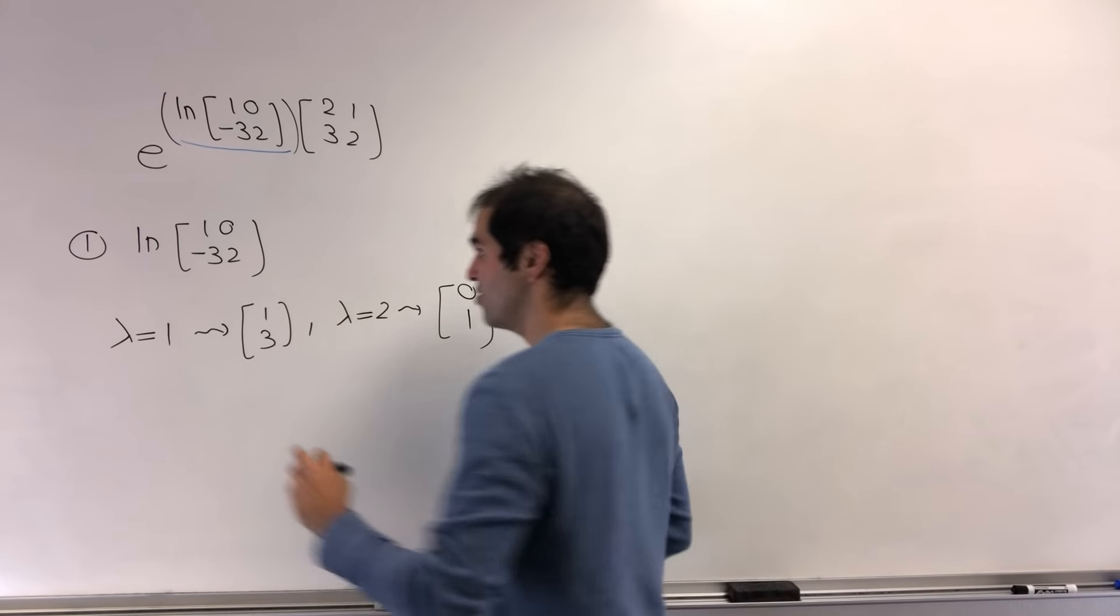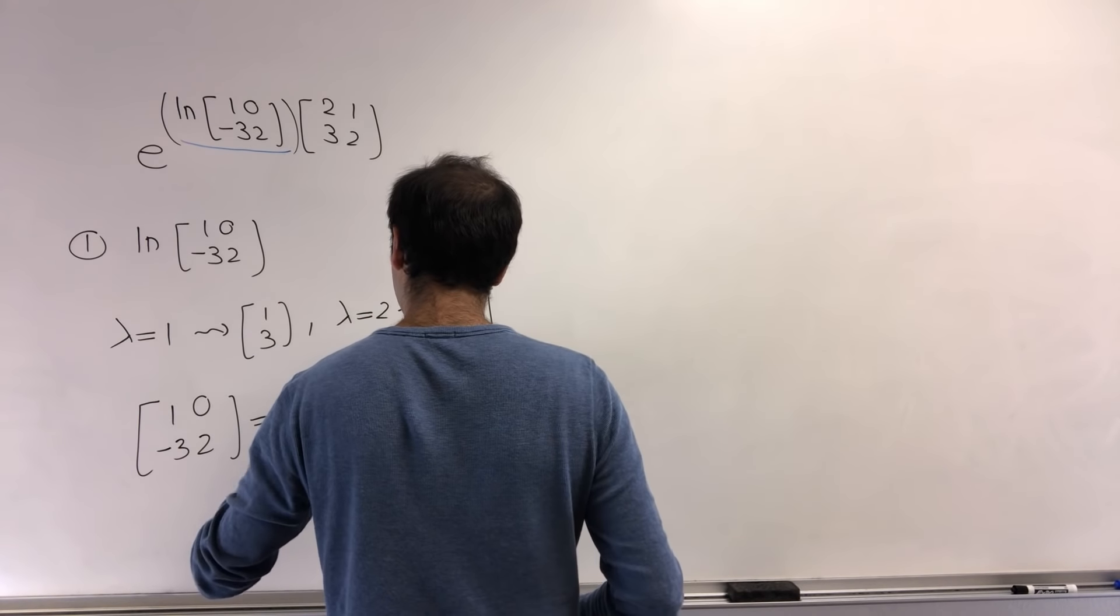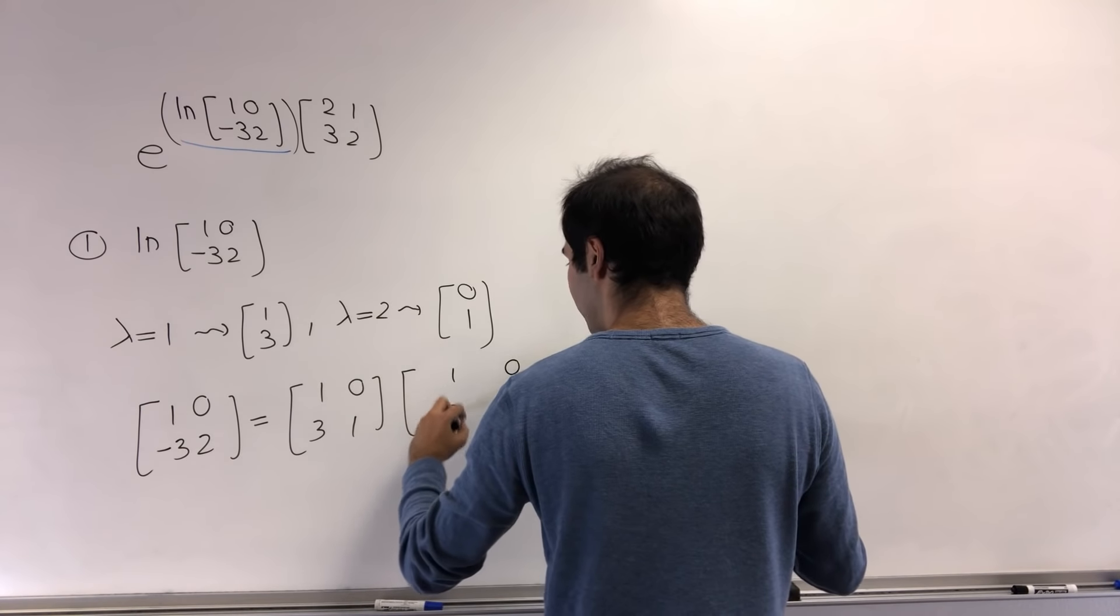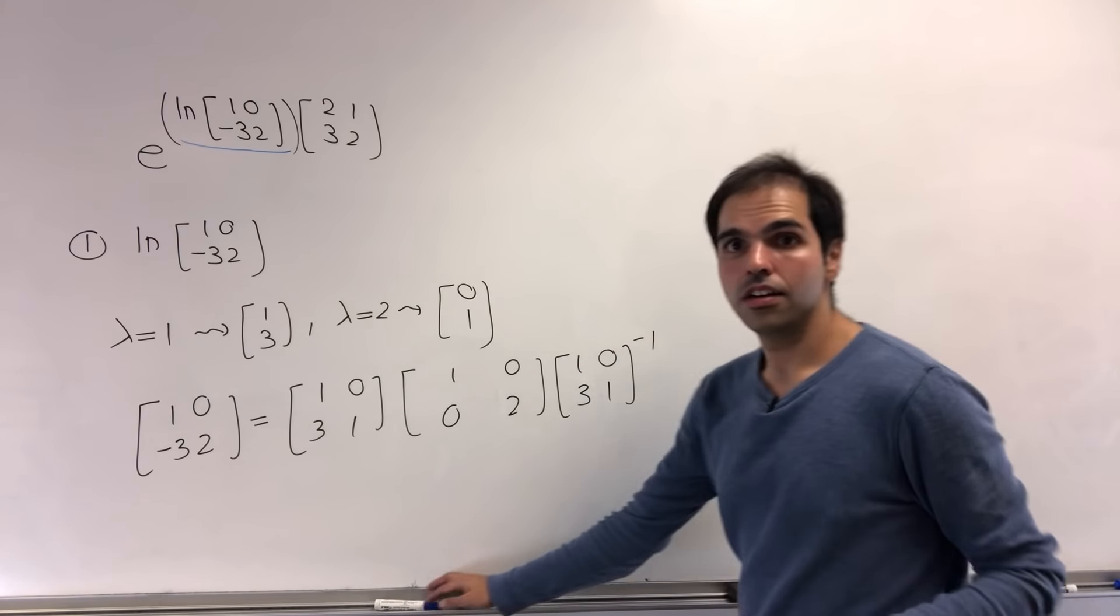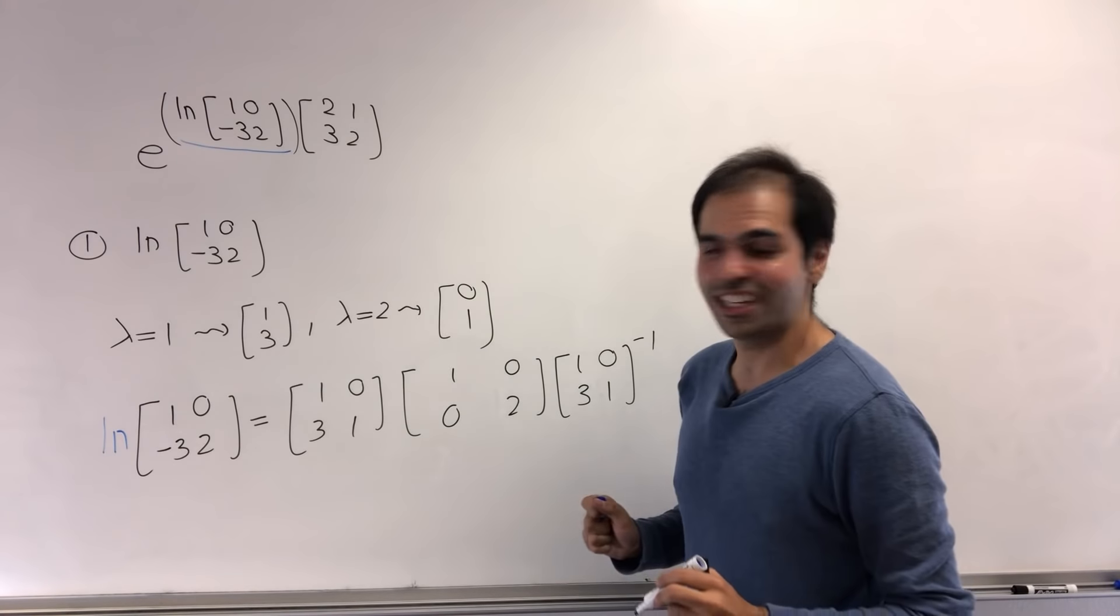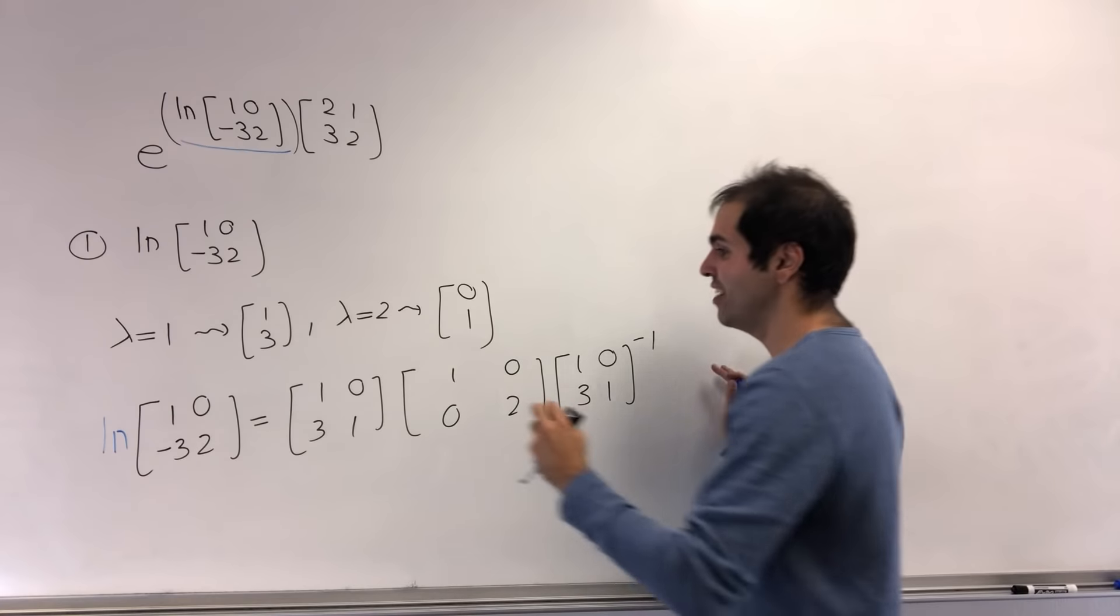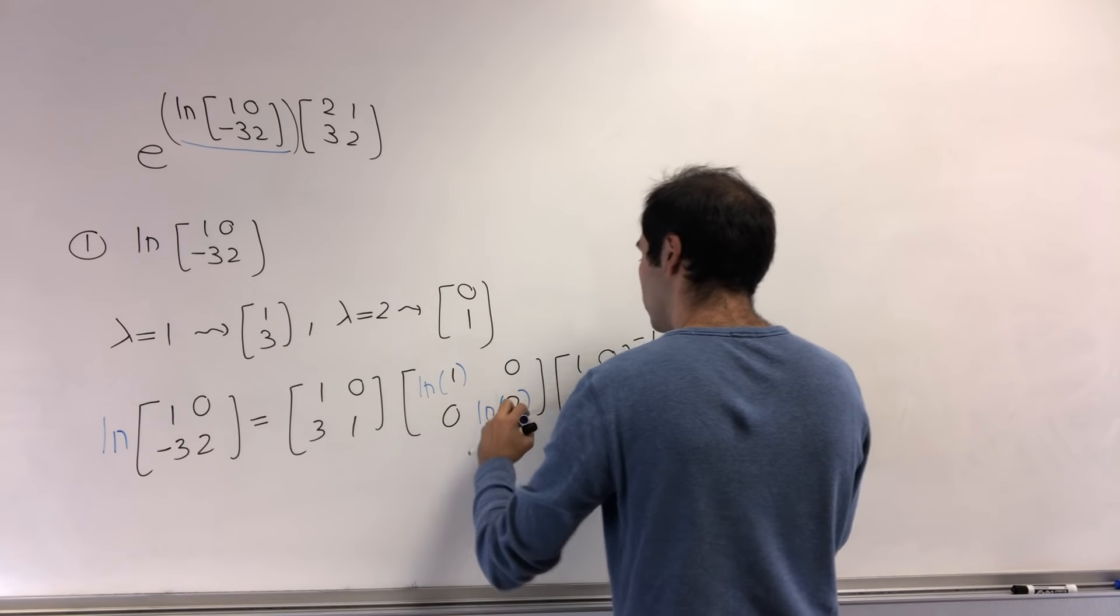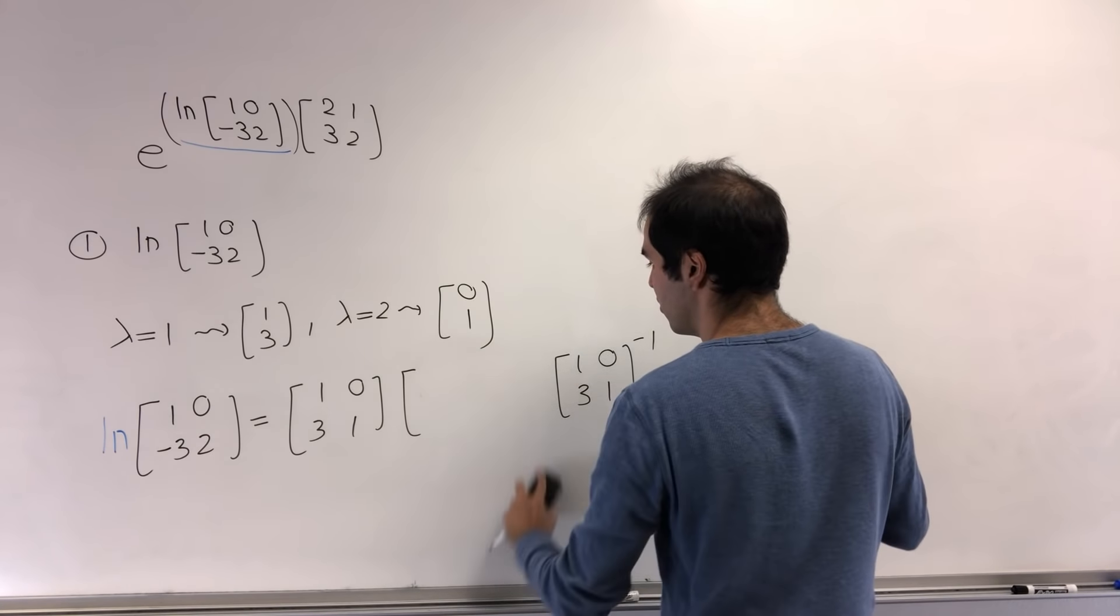But what does that tell us? Well, it tells you that the matrix 1, 0, minus 3, 2, that is just 1, 3, 0, 1. So the eigenvectors times the corresponding eigenvalues, 1, 0, 0, 2, and then times 1, 0, 3, 1 inverse. And how do you do ln of that? Well, to take weird functions of matrices, the nice thing here is, because you diagonalize it, you just need to put ln on the diagonal entries. So ln of 1, 0, minus 3, 2, that is ln of 1, 0, 0, 0, ln of 2. But ln of 1 is just 0, so this just simplifies to 0, 0, 0, 0, ln of 2.